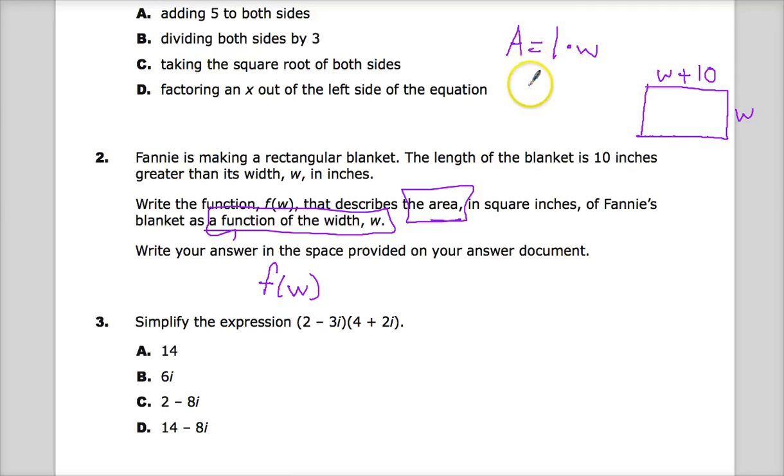So start here and substitute in values that make sense. Length, of course, is W plus 10. And width is just W. You could stop there, to be honest. That's all they're really asking. Generally speaking, we'll put that variable out in front. So I'll say W times W plus 10.